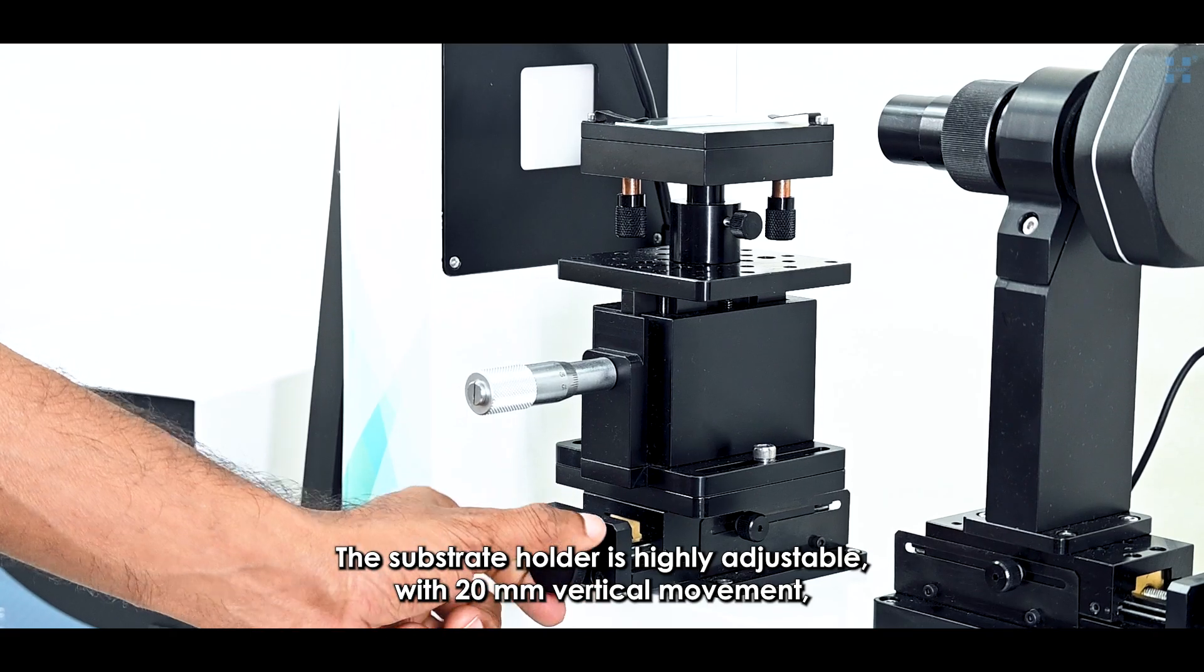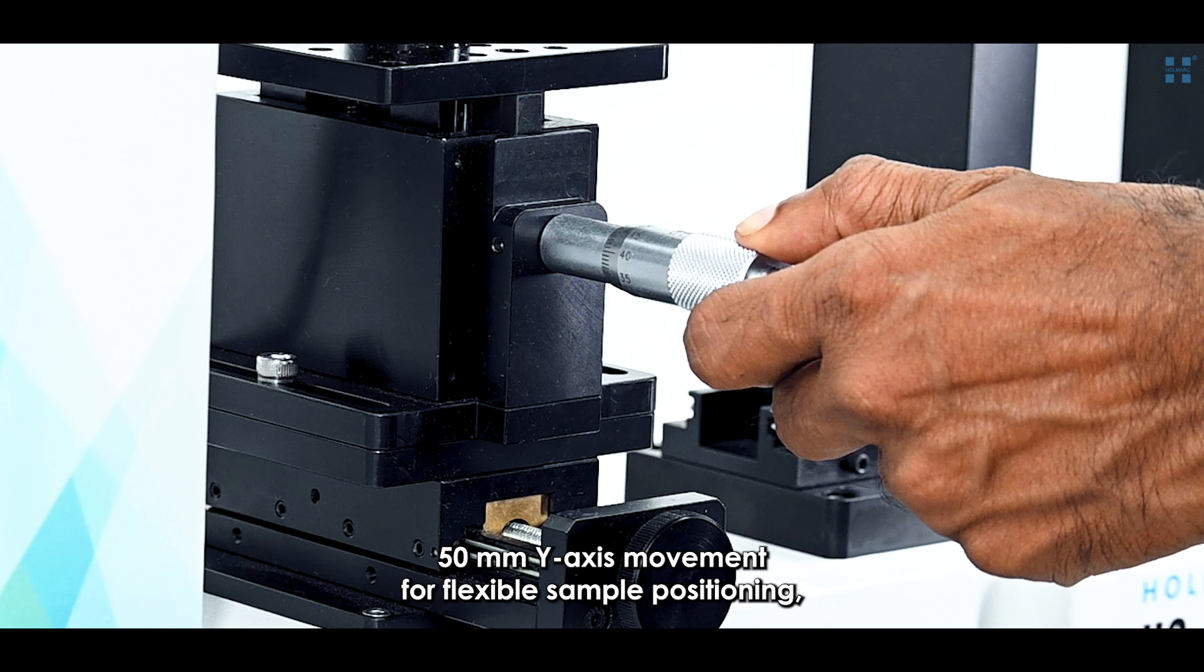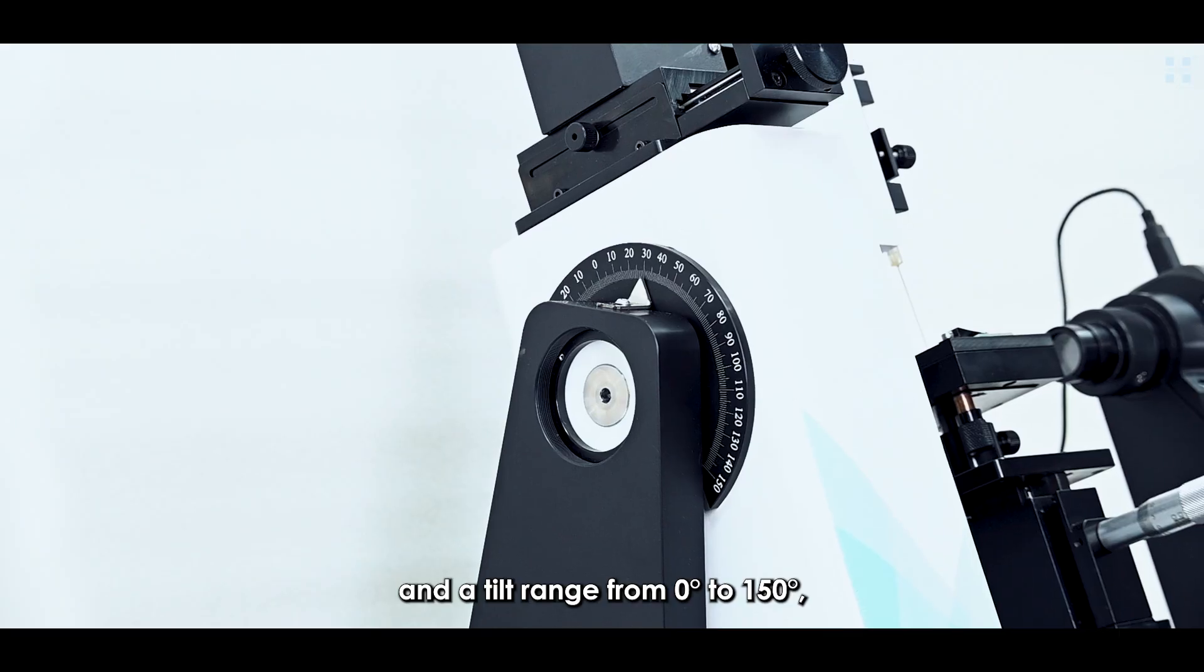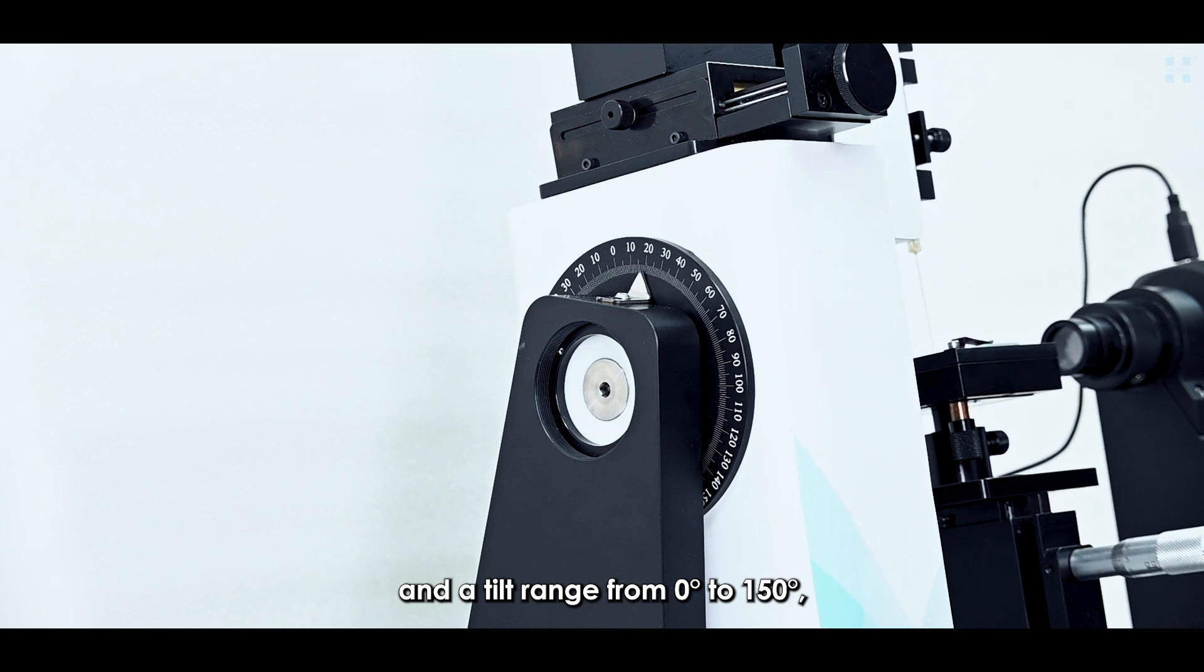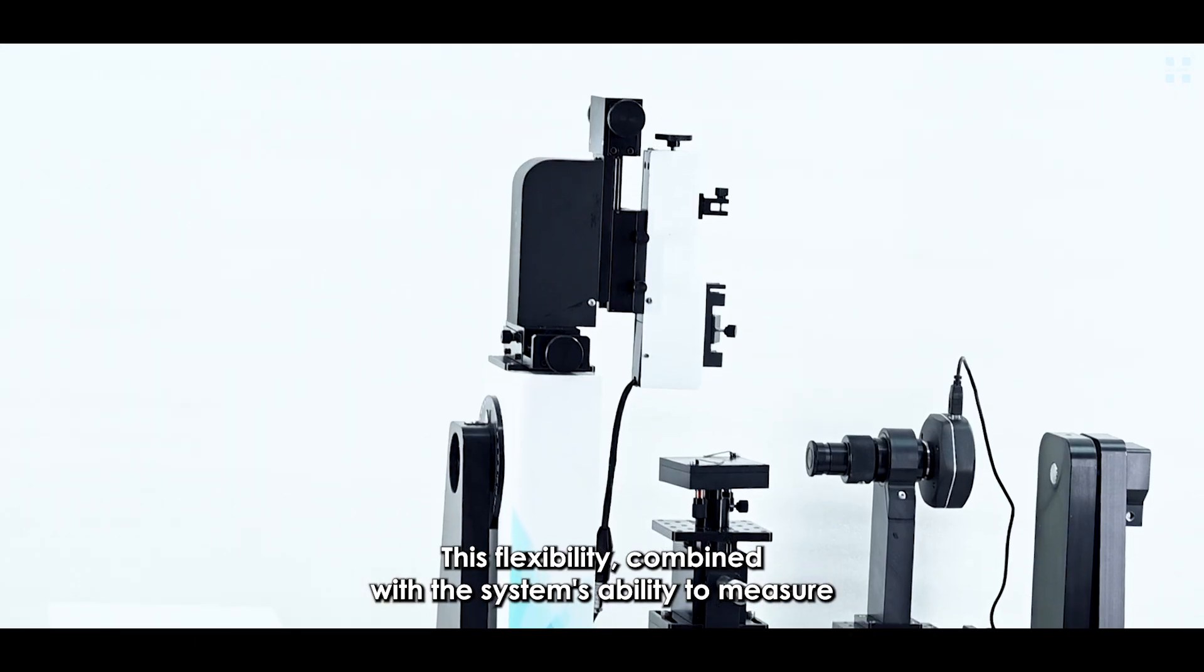The substrate holder is highly adjustable, with 20 mm of vertical movement, 50 mm of Y-axis movement for flexible sample positioning, and a tilt range from 0 degrees to 150 degrees, enabling precise measurement setups.